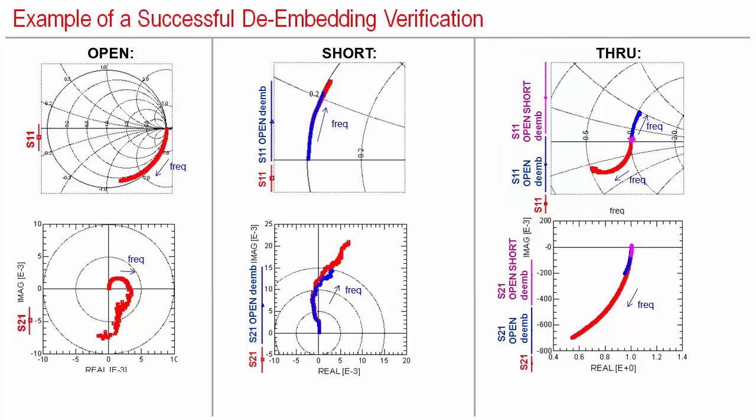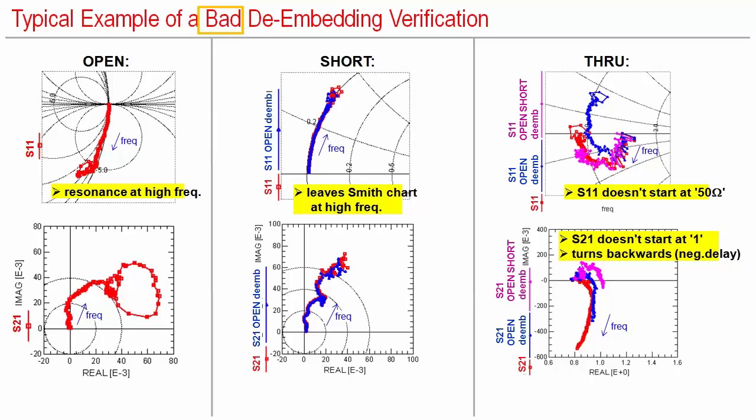For a better understanding, I want to show you also a bad de-embedding verification example. At low frequencies the open looks okay, but exhibits a resonance at higher frequencies. The short unde-embedded in red and also de-embedded from the open in blue looks okay besides the already identified resonance.